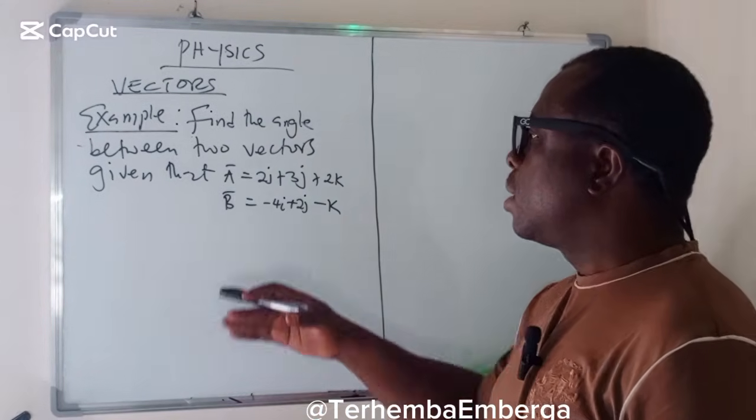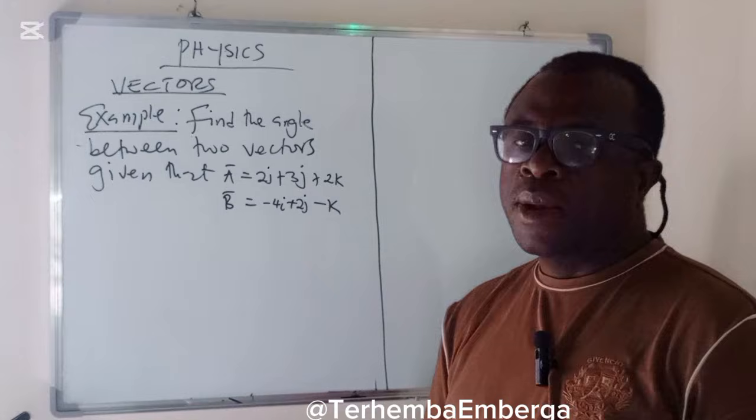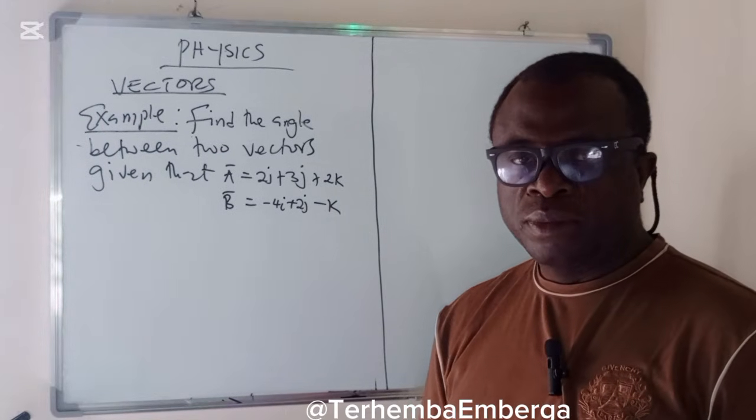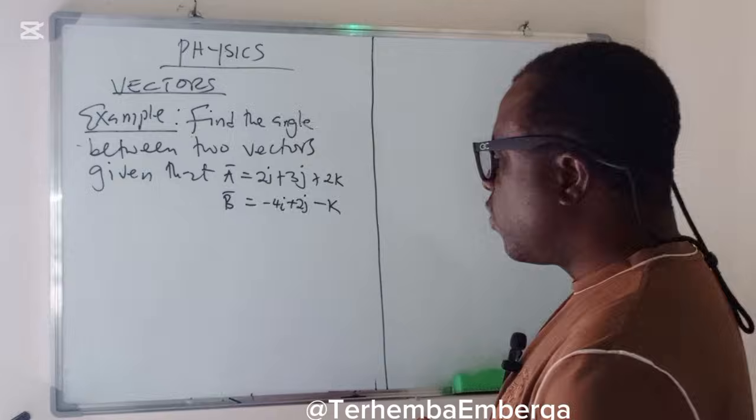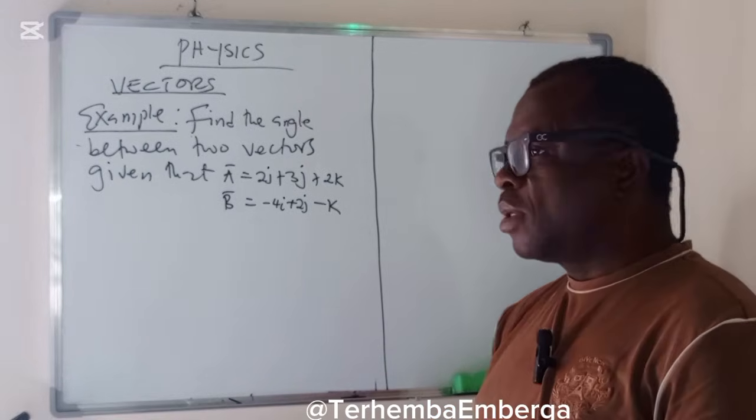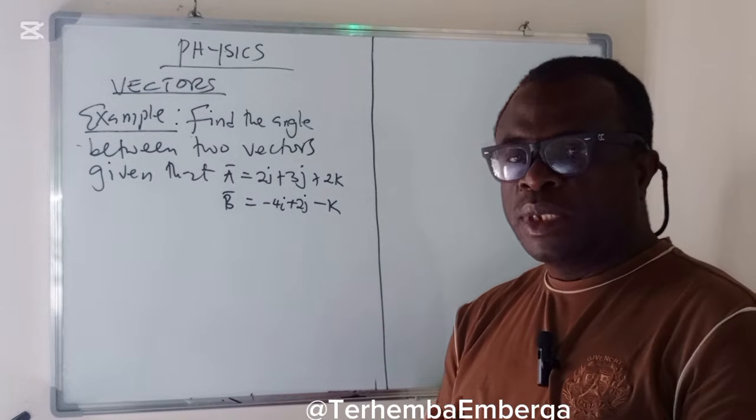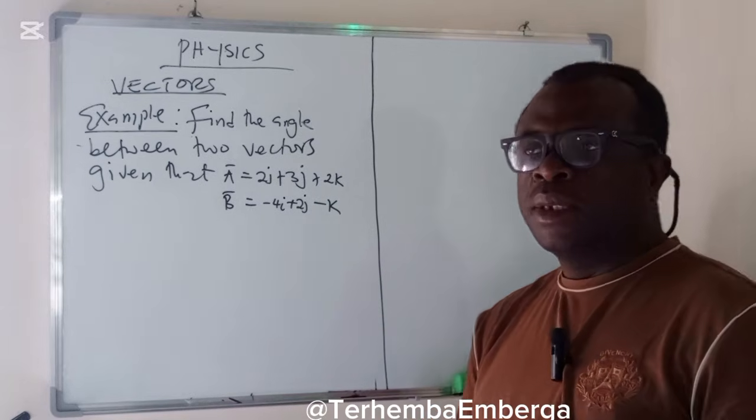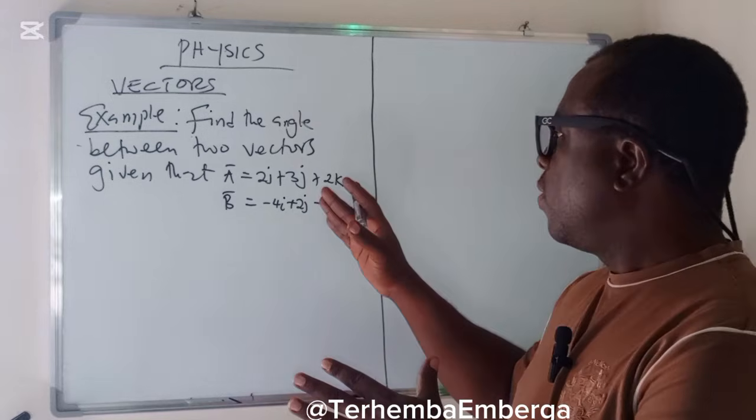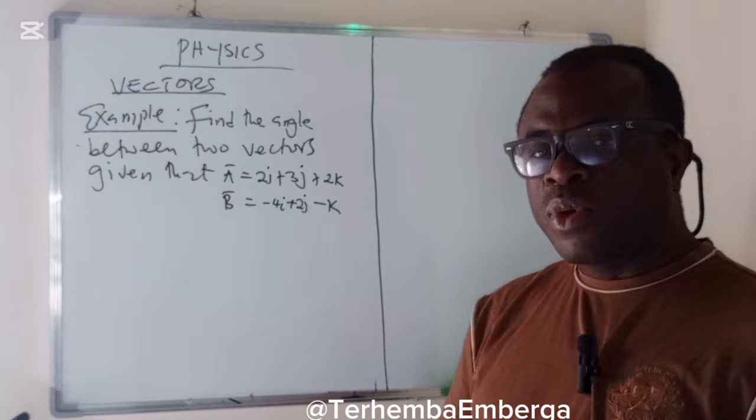We'll look at some examples on how to find the angle between two given vectors. First of all, you have to ask yourself what is the formula. Because there are basic steps you must take if you are asked to calculate, for example in this case, the angle between two given vectors. You have to ask, what is the formula?